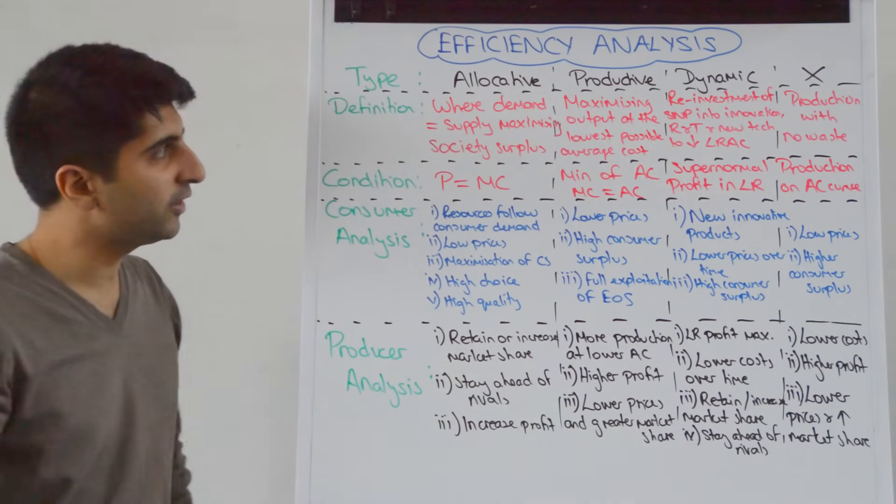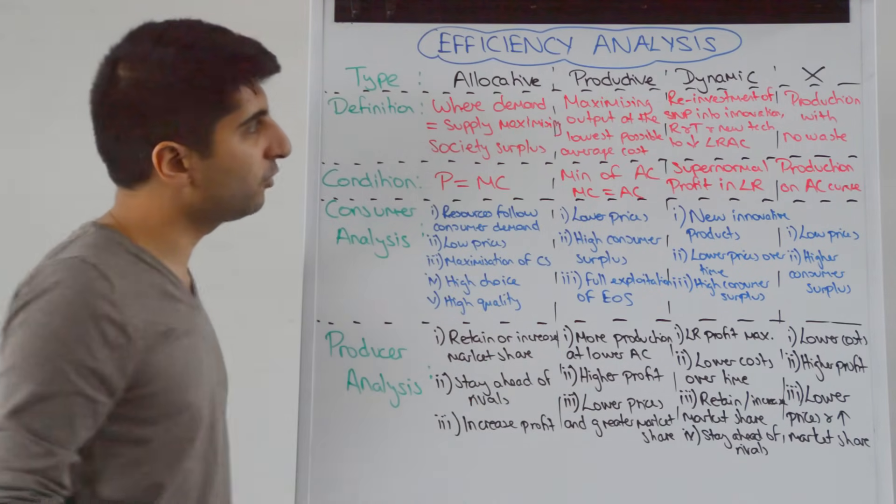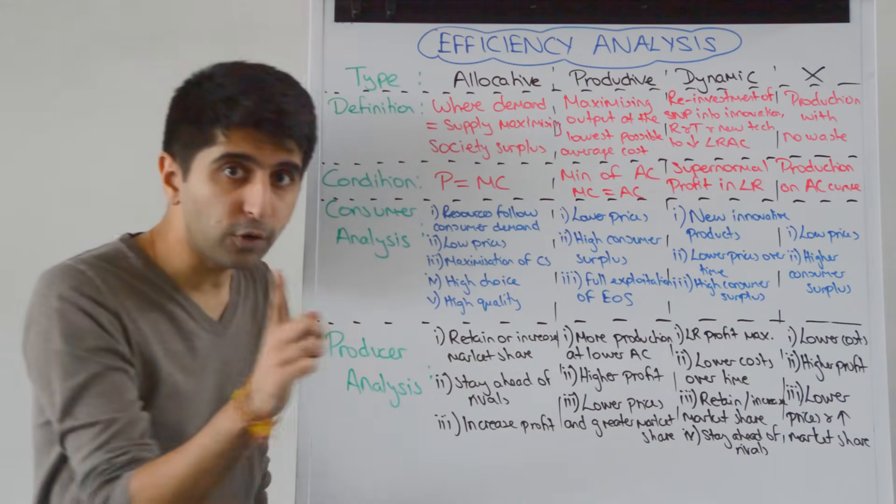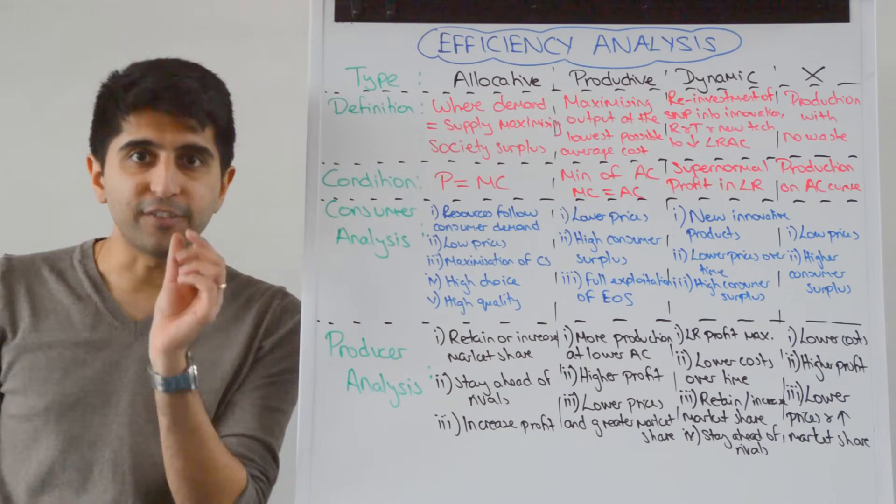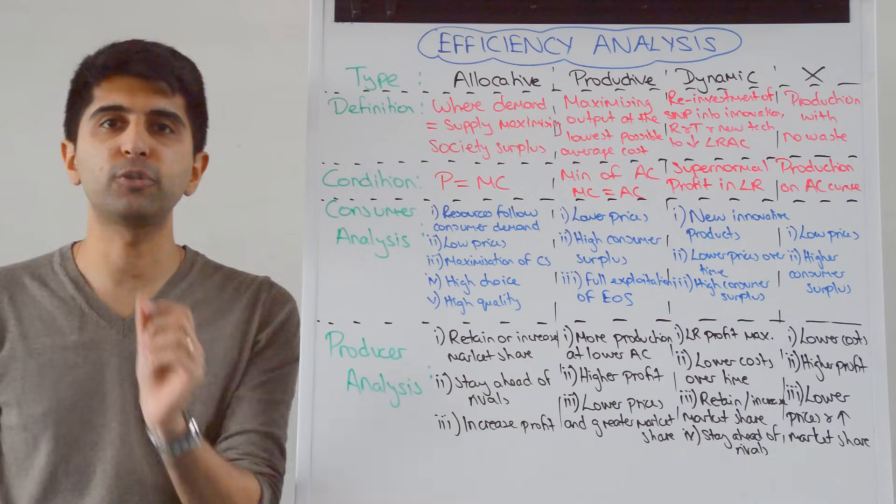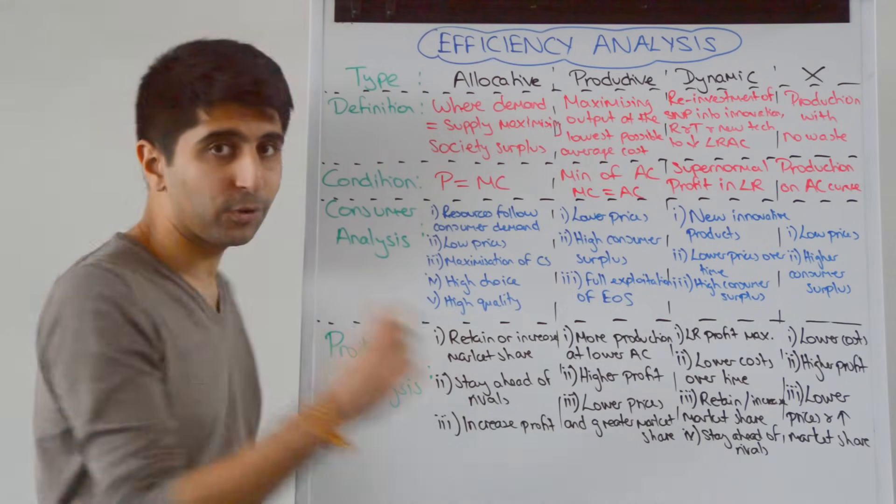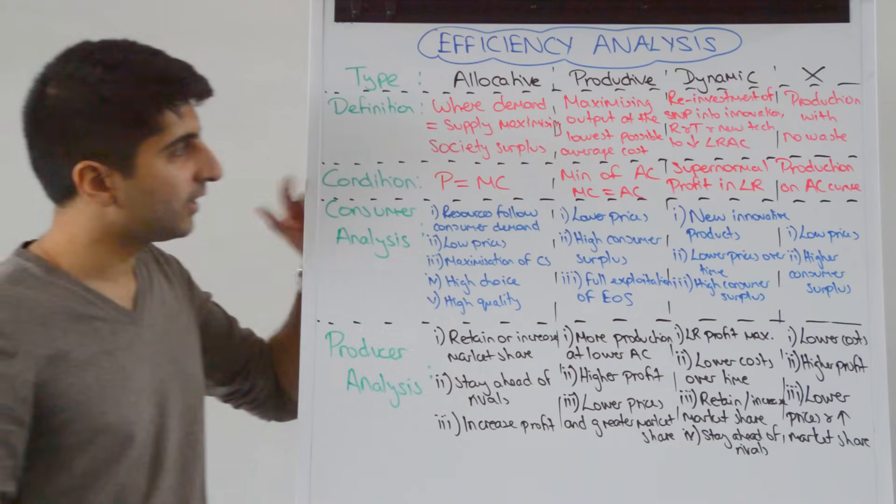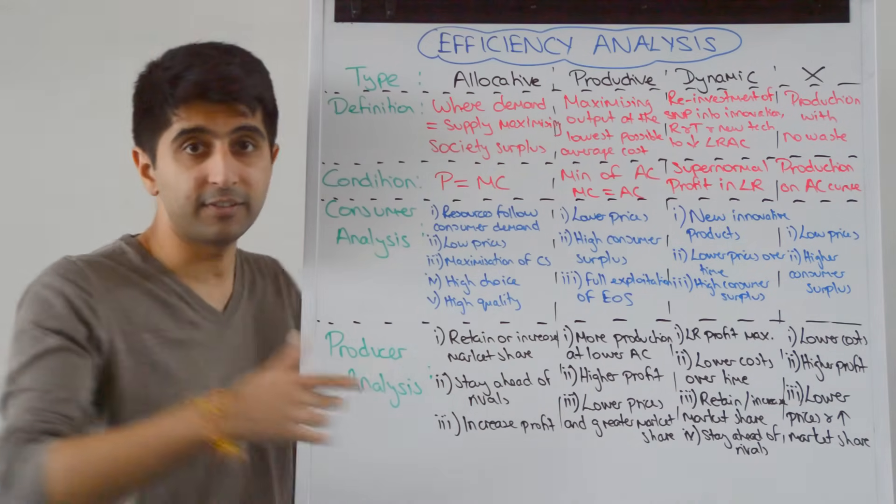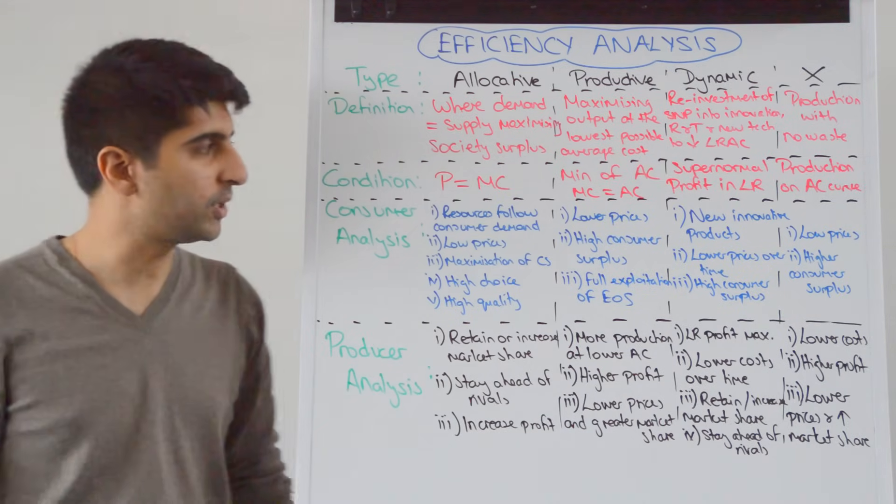Productive efficiency, what's the definition of that? Being hyper-technical, it's the maximization of output at the lowest possible average cost. What you should add on to this definition is that it is the full exploitation of economies of scale. Maximum output at the lowest possible average cost, full exploitation of economies of scale. Why does that occur? As we learned from the last video, at the lowest point of average cost - you might want to say where marginal cost equals average cost - that's always going to be the minimum point of average cost.